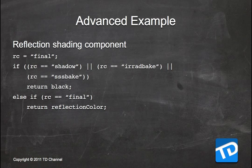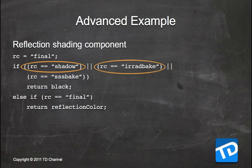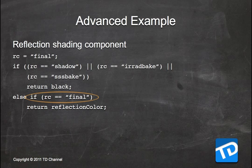Another example: a reflection shading component. Because reflection is a view-dependent calculation, you can't pre-bake it. So if RenderContext is 'shadow' — reflections don't contribute to shadows — or RenderContext is 'irradiance bake,' or RenderContext is 'subsurface scattering bake,' return black. Else, if we're in RenderContext 'final,' return the reflection color. These are examples of how you can concatenate rules together to make more complex decisions about how to run your program.